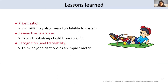Some lessons learned: when we talk about cloud resources, it's not just the cloud resources we want to sustain these activities — it also involves human resources. The 'F' in FAIR may also mean 'fundability' to be able to sustain. To accelerate research, we should probably not build things from scratch but try to extend things, try to contribute, open up an issue in Pangeo Forge if you want something new. We also love rewards and recognition to motivate us. Beyond citations, we should think more in terms of what is the impact, both to users and to the research community.